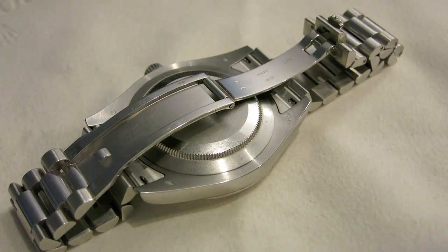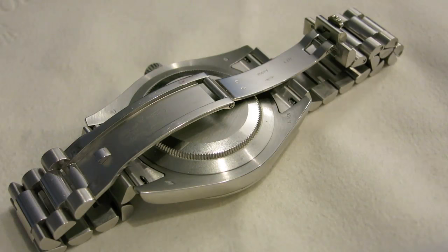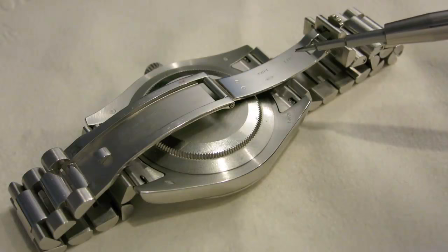In order to take the band off your watch, you're going to need a spring bar tool kit or a sturdy toothpick. The spring bar tool we're using is a Bergeon 6767.